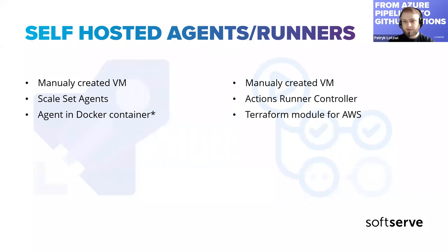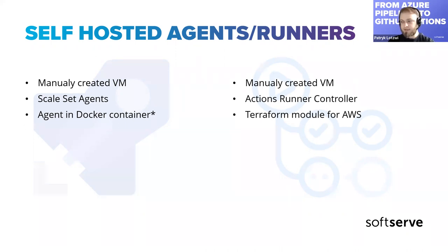For GitHub Actions you can of course do it manually, but there's also one cool option: the Actions Runner Controller for Kubernetes. Using that controller, you can create an agent in Kubernetes — there's also auto-scaling, though you need to do some configuration. It's not quite as easy as the scale set agent, but you can achieve similar auto-scaling runner pool behavior.